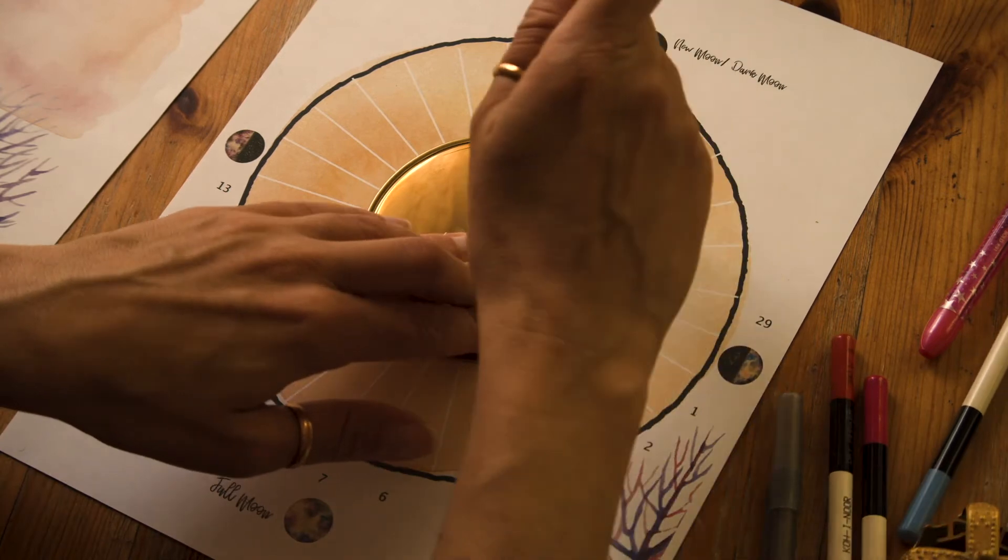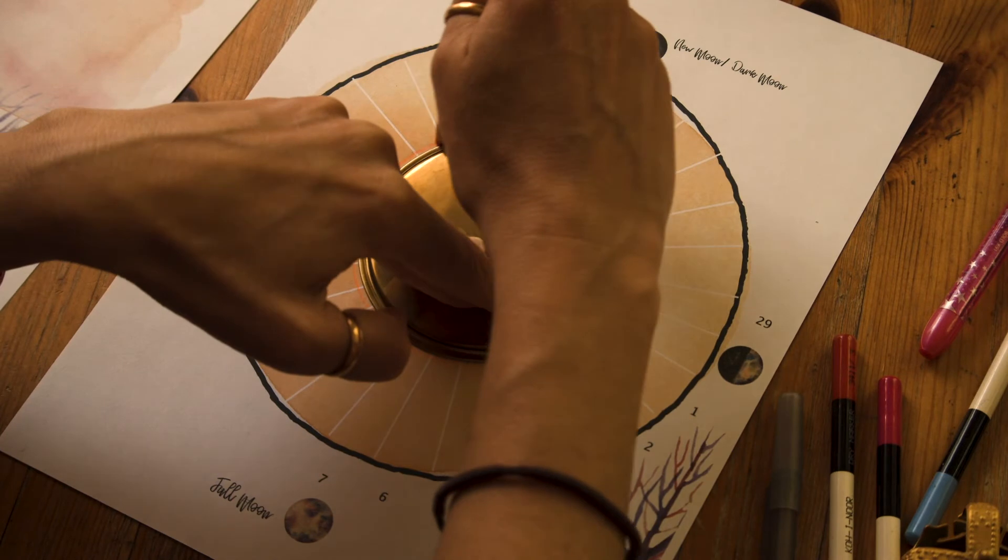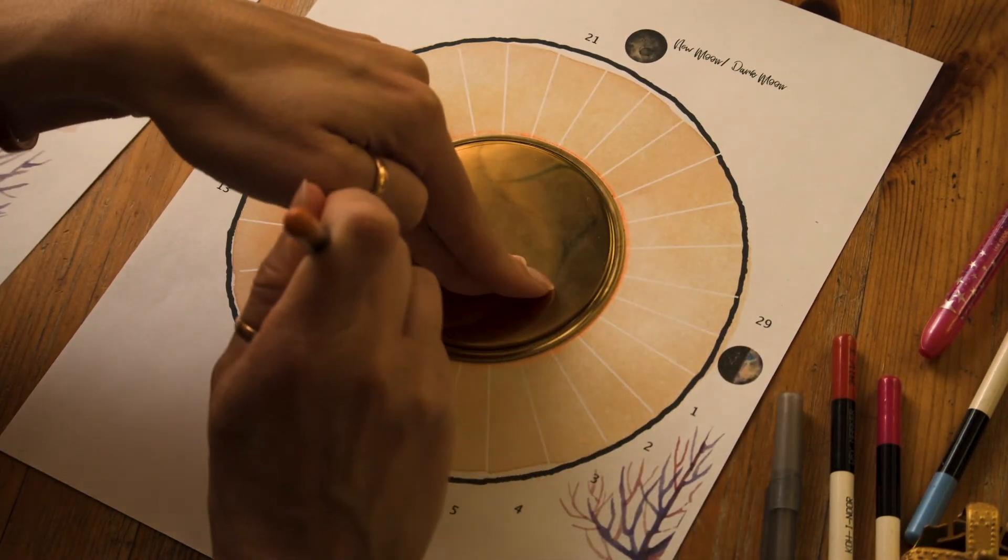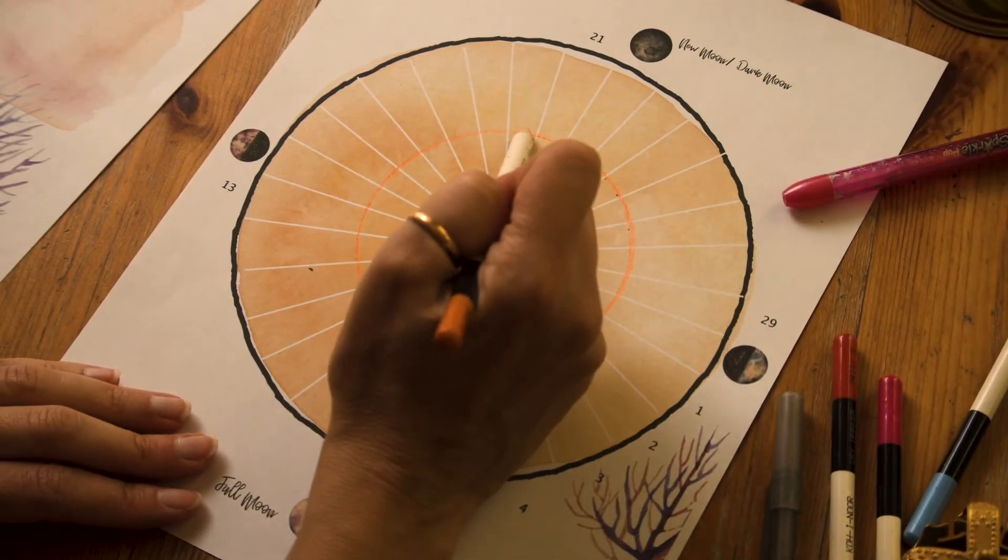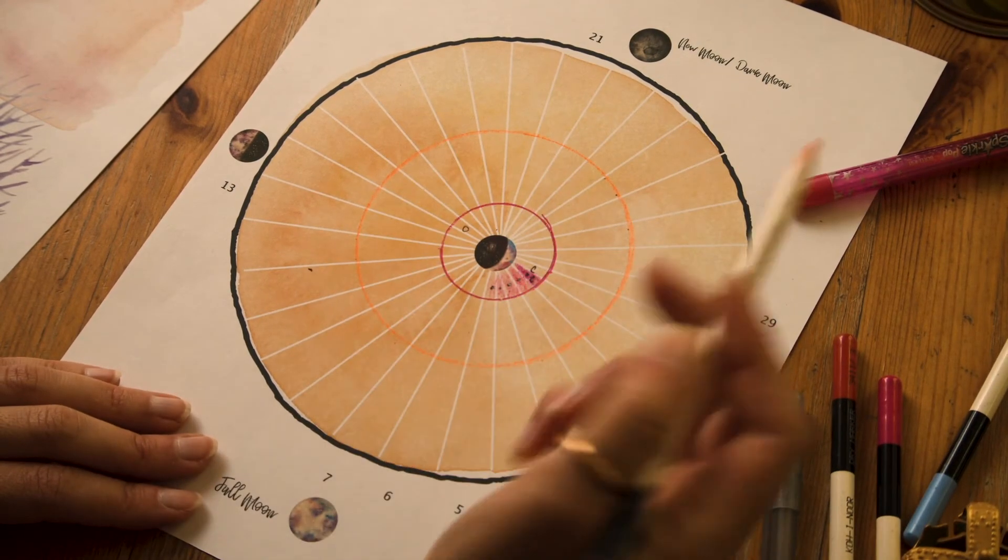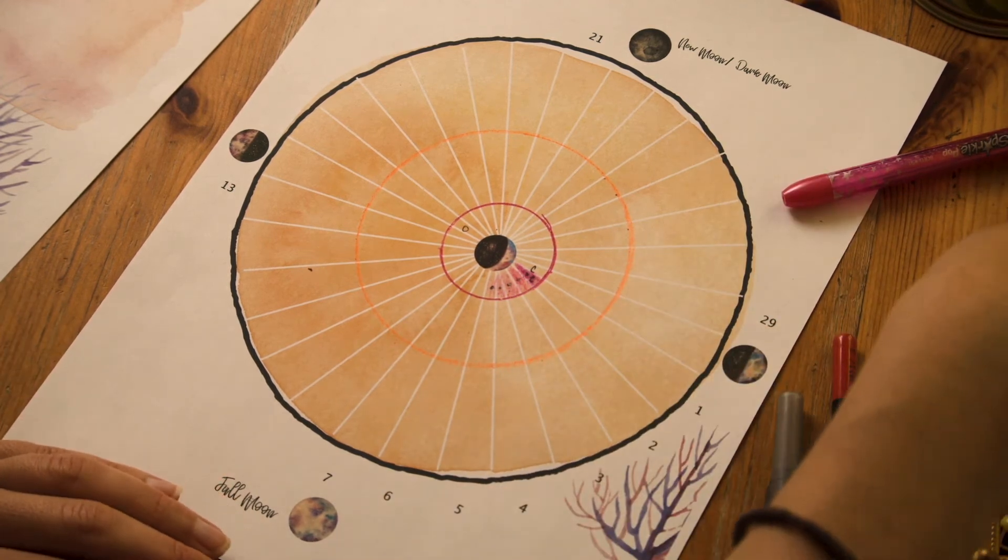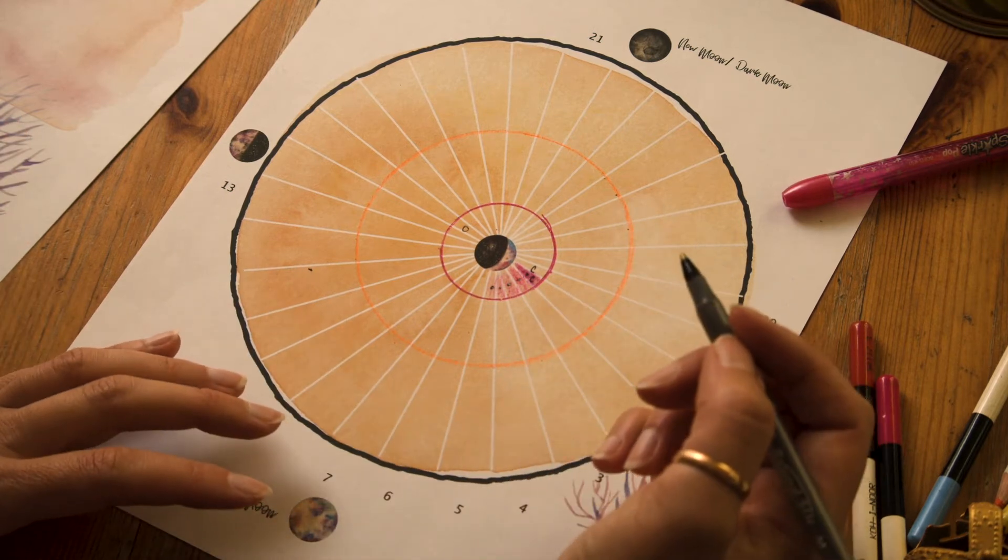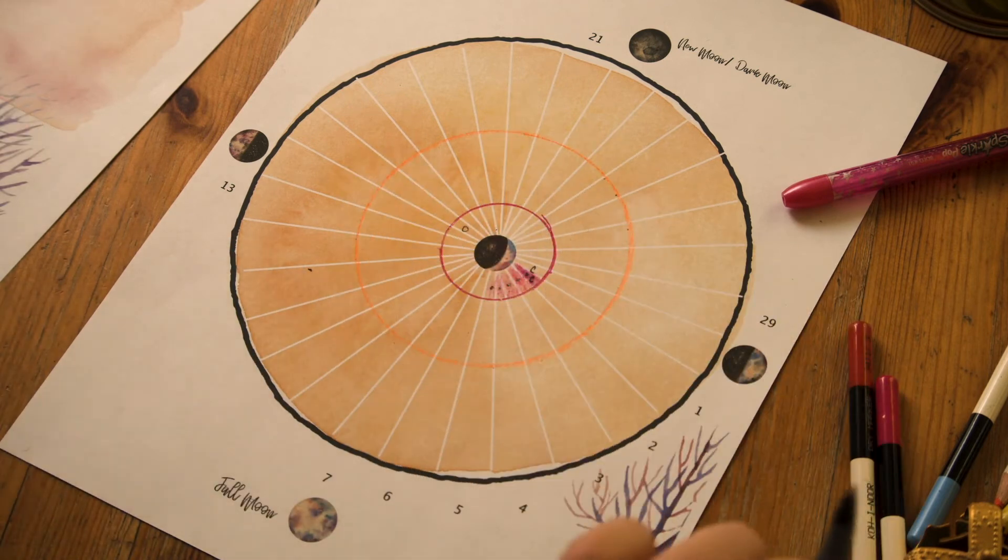And then I would go on to my next circle. I'm gonna do it orange this time, and this circle I like to represent my inner world, like my feelings. So here I would put down something like, let's say I wanted to keep track of my good days and my bad days.